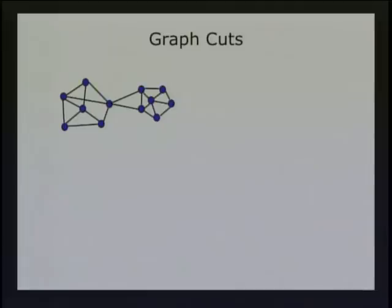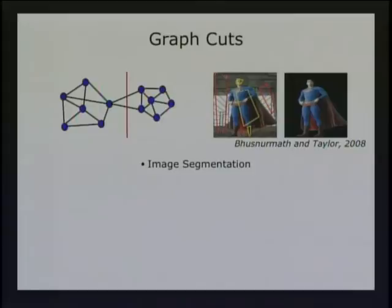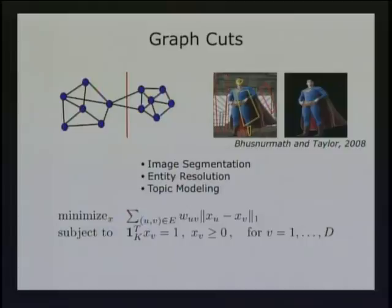One more example would be trying to solve graph cut problems. Recently in machine learning, people have had a lot of success doing image segmentation with minimum cuts. It's also been used by Microsoft Research for topic modeling and entity resolution. These problems also have a really nice form: a sum of weights times the L1 distance between two variables XU and XV, where each XU is assigned to one of the vertices in the graph and is a member of the probability simplex. Again, it has the form we like — a giant sum of terms, each requiring only local information.